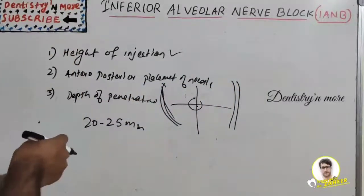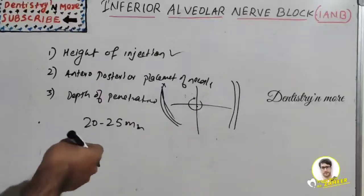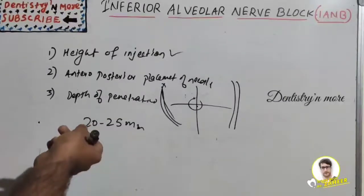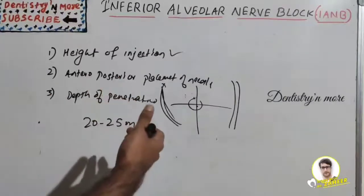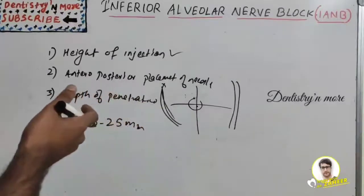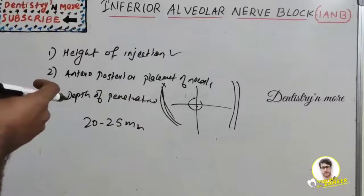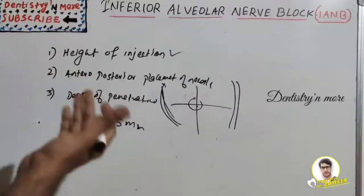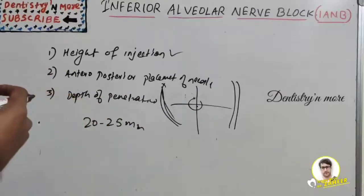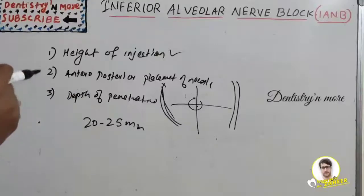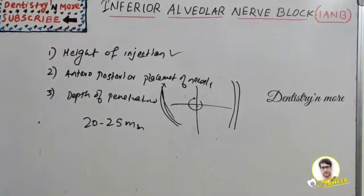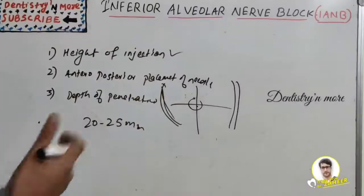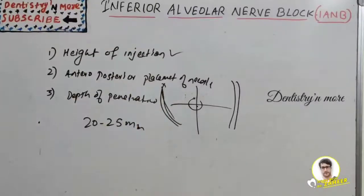If bone is contacted too early (less than half the needle length), withdraw the needle slightly without removing it from the tissue, bring the syringe barrel toward the front of the mouth over the canine or lateral incisor on the contralateral side, then redirect the needle until a more appropriate depth of insertion is obtained.